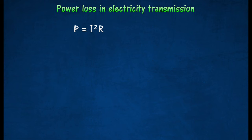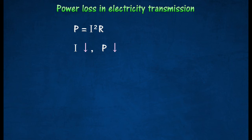The formula shows that the power loss during transmission is directly proportional to the square of the current flowing through the cables. The power loss during transmission can therefore be greatly reduced if the transmission current is reduced significantly.